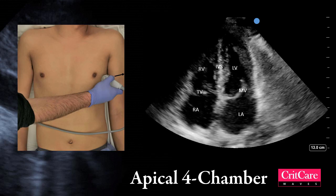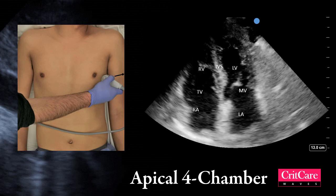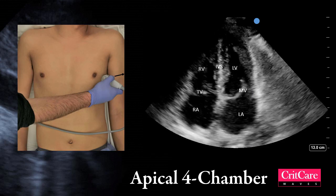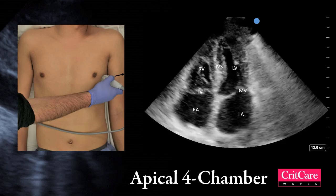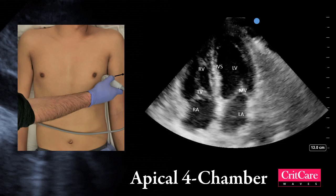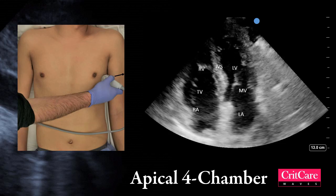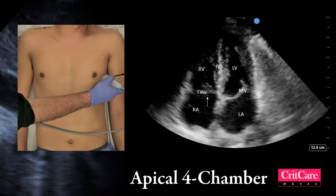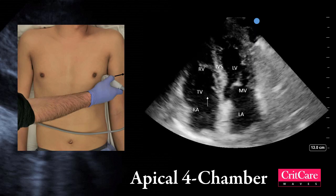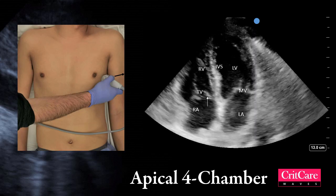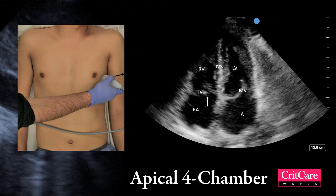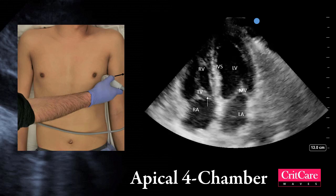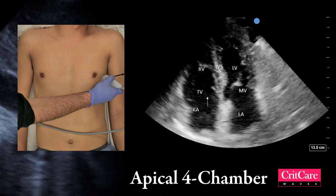The apical 4-chamber view can look identical if the orientation marker is pointing towards the right or 9 o'clock position instead of the left. For this reason, it is important to note that the tricuspid valve is slightly apically displaced compared to the mitral valve. Knowing this anatomic pearl will help you distinguish the mitral and tricuspid valves.